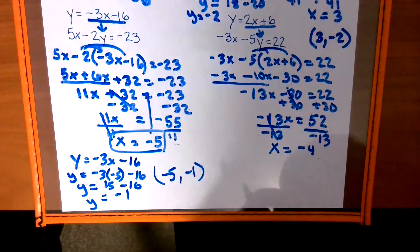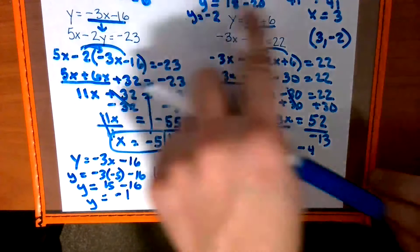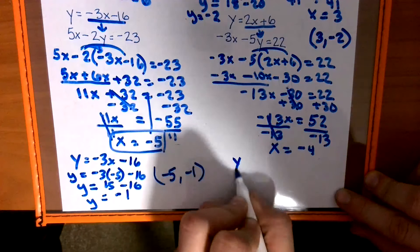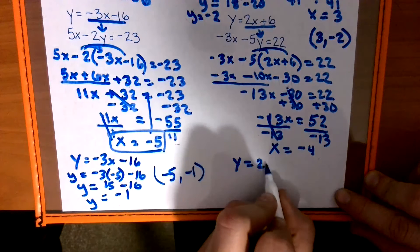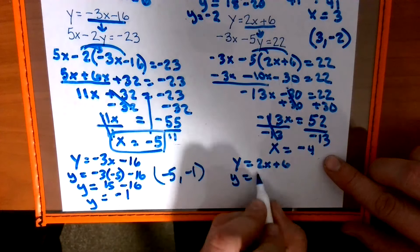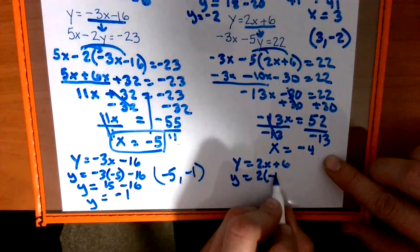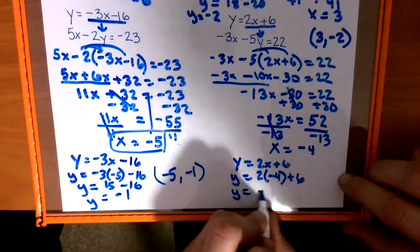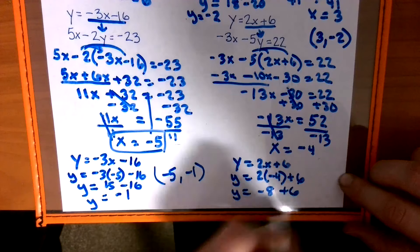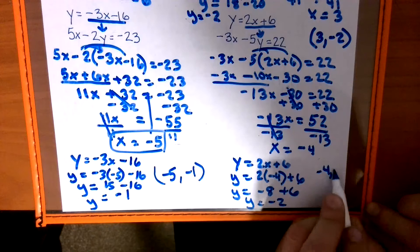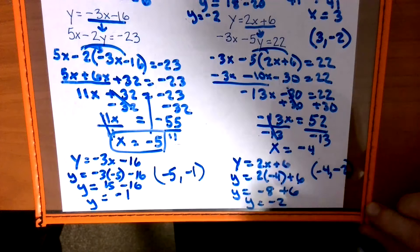22 plus 30. Negative 13x equals 52. Divide by negative 13. x equals negative 4. That's for the x value. Now we have to pick one of these. And you start to pick the one that looks easier. And to me, it's a lot of work for one problem. There's so many parts to this. So we have y equals, in place of the x, we're going to put a negative 4. And then we have y equals negative 8 plus 6. Y equals negative 2. And our coordinate pair would be negative 4, negative 2.